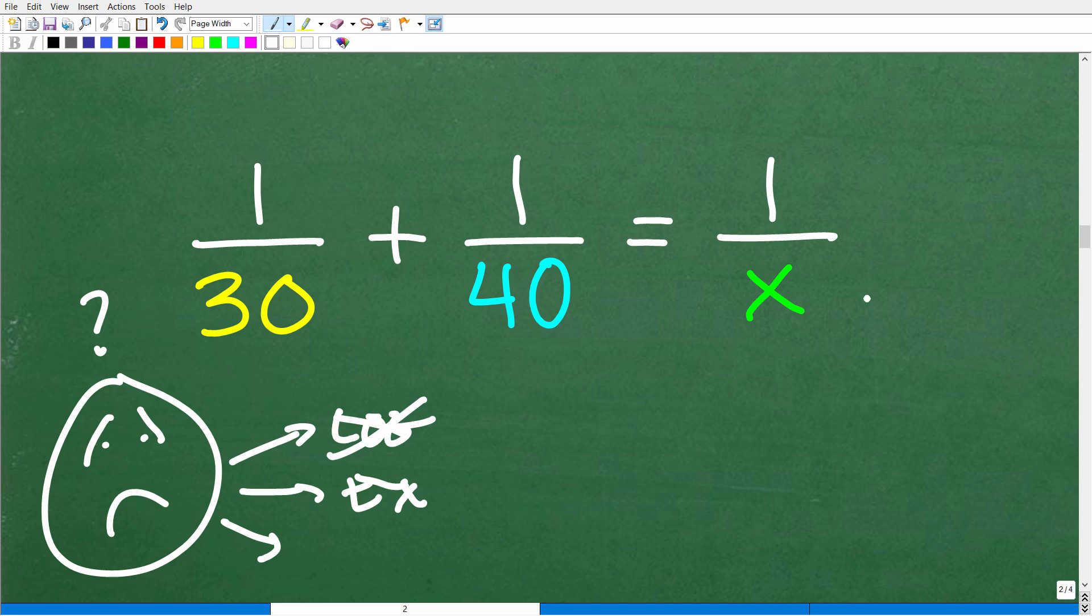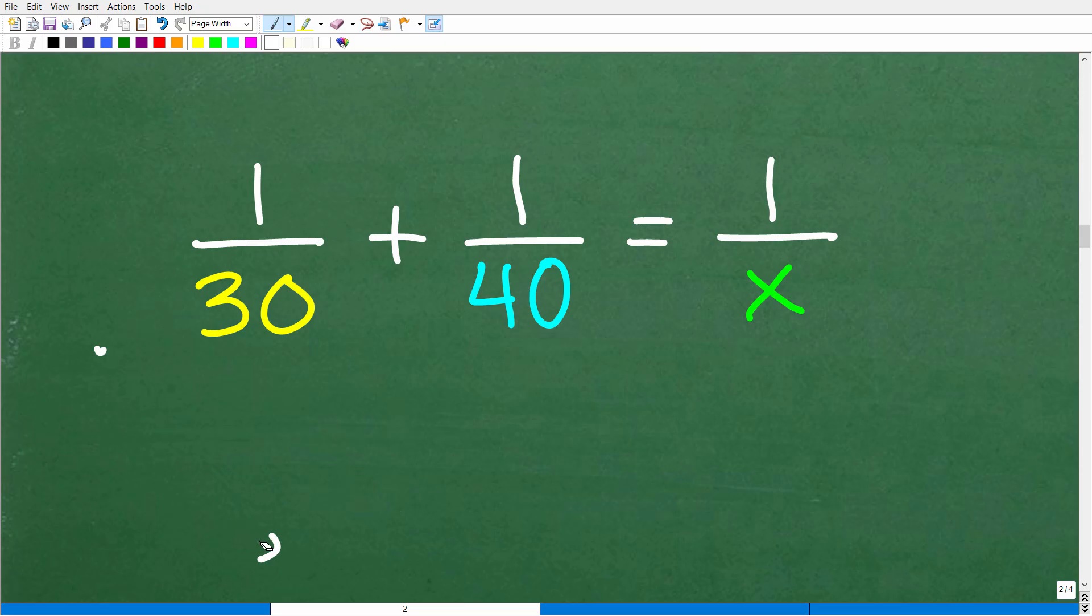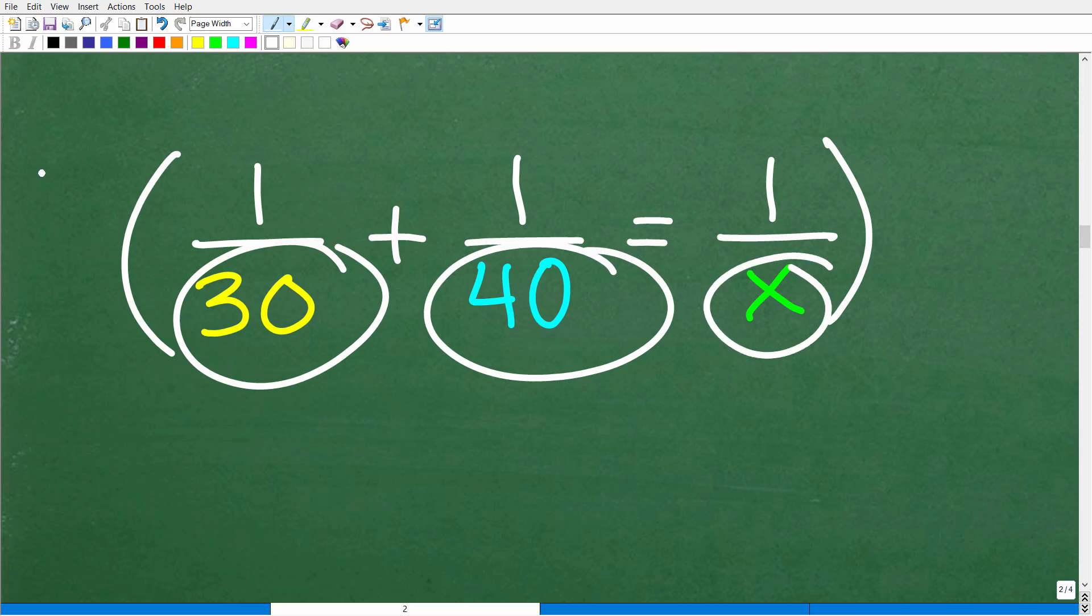This happens to be what we call a rational equation. A rational equation, a rational expression is one where there's fractions involved. So I don't want to overwhelm you here.